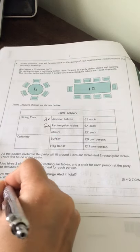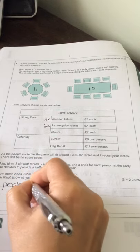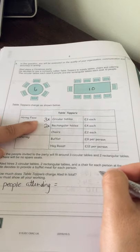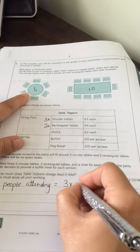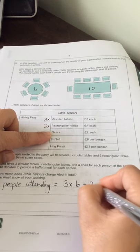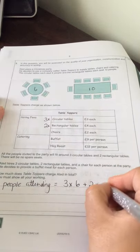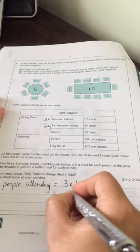So people attending equals, well there's going to be three circular tables which sit six people each. And then there'll be two rectangular tables that sit ten people each. So in total,